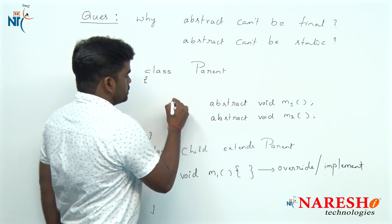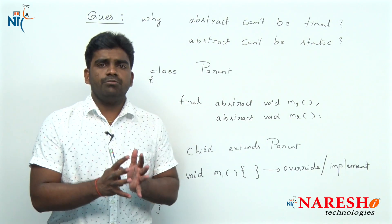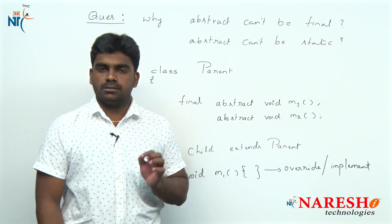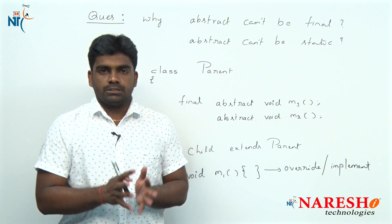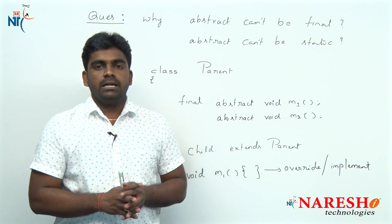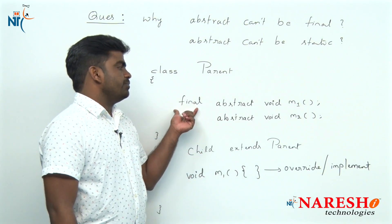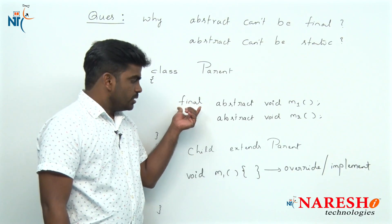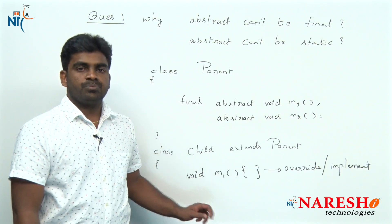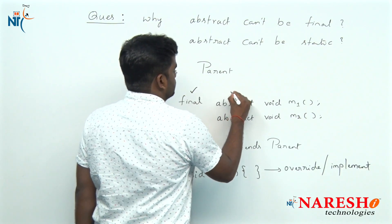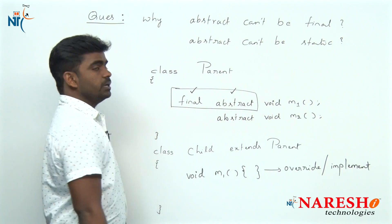But when we declare the method as final, what does final mean? Final is a modifier that restricts update permissions. Final means it is a fixed object — you can access the functionality, but you cannot update it. So whenever you declare a method as final, how can you override it? Overriding means updating the functionality. That is impossible. That is why final and abstract is an illegal combination of modifiers.